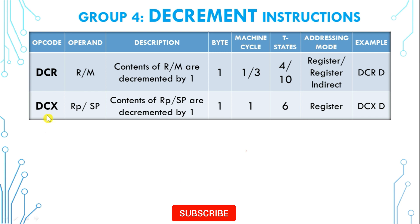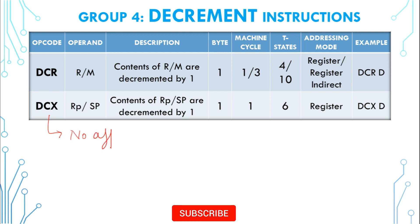The next instruction is DCX. In the DCX instruction, X is used to signify that the size of the operand is 16 bits. These operands can be any general purpose register pair or the stack pointer. Register pairs in the 8085 microprocessor are B, D, and H. For example, DCX D — it will decrease the contents of the DE register pair, where register D is the upper byte and register E is the lower byte, by 1. DCX will not modify any flags; there is no effect on any flags.